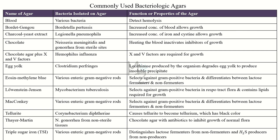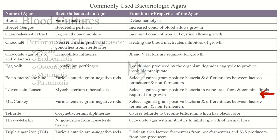Lowenstein-Jensen agar is used to isolate Mycobacterium tuberculosis. It selects against gram-positive bacteria in respiratory tract flora and contains the lipids required for growth.